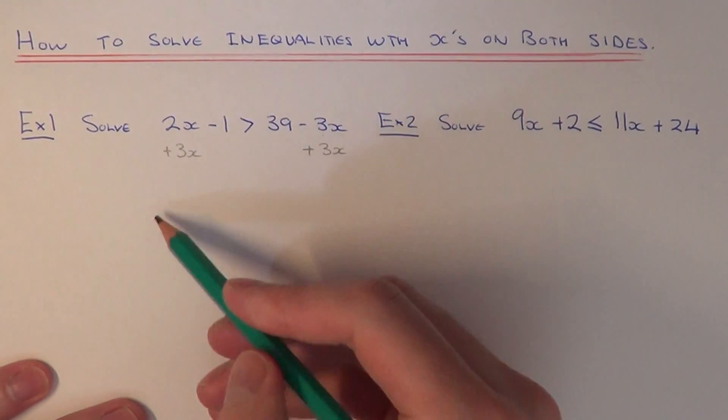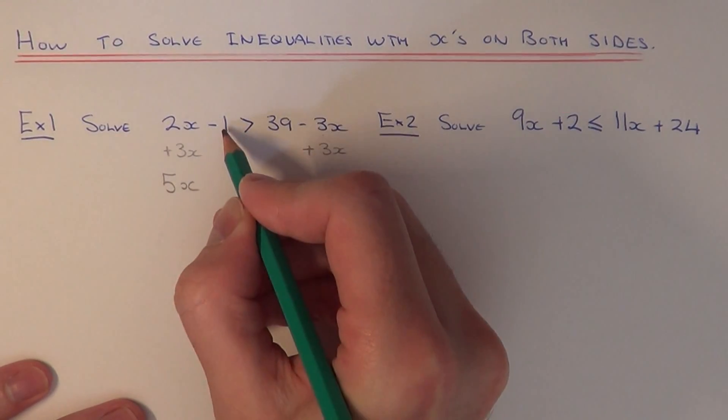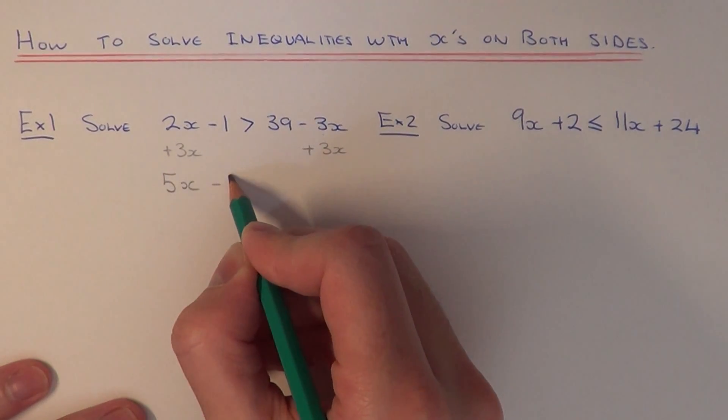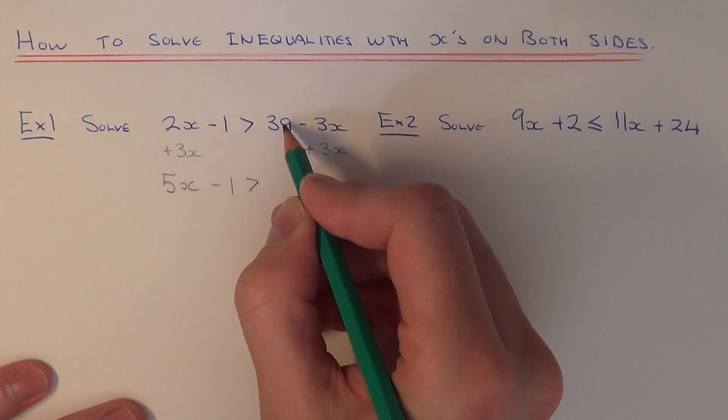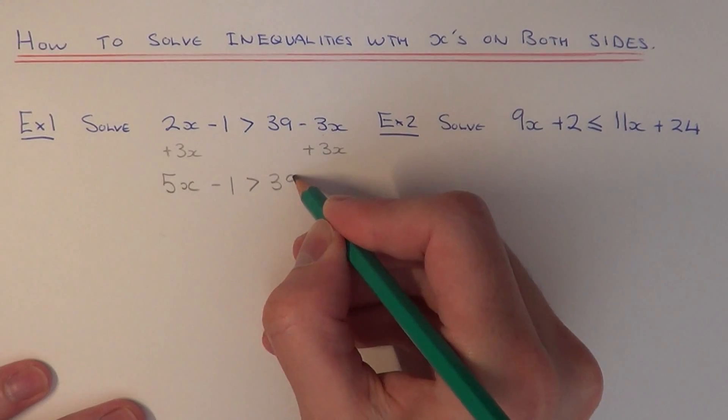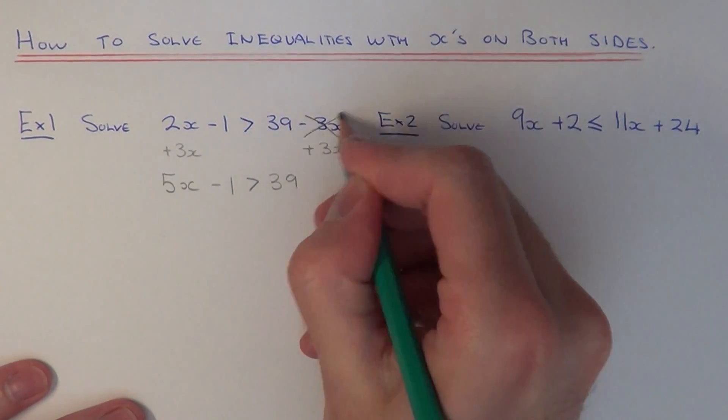So we just need to add the 3x onto the 2x. That will give 5x. And if we just copy the numbers down onto the next line, copy the minus 1, keep the inequality the same as more than, and the 39 gets moved down. And this has now got rid of the minus 3x.